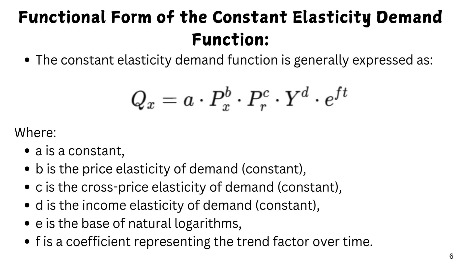All demand function components combine into the mathematical formula. That is, Qx = A × PX^B × PR^C × Y^D × E^(Ft), where A is a constant, B is the price elasticity of demand (constant), C is the cross-price elasticity of demand (also constant), D is the income elasticity of demand (also constant), E is the base of natural logarithm, and F is the coefficient representing the trend factor over time.